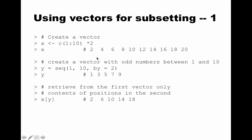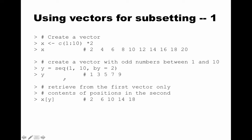Now let's create another vector which contains only the odd numbers between 1 and 10. We use the sequence function to do that. We say seq(1, 10, by=2) — starting value 1, ending value 10, step 2 — and therefore we get 1, 3, 5, 7, and 9. So y is a vector with the values 1, 3, 5, 7, 9.